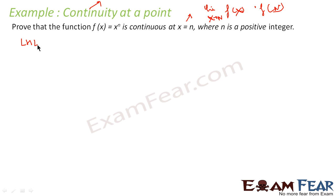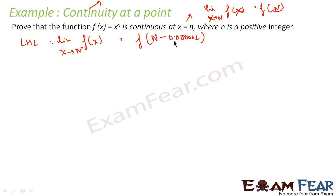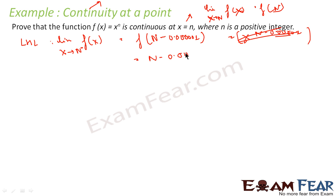Let's find the left-hand limit: the limit of f(x) as x tends to n minus, taking a number just less than n. We take n minus 0.0000001, a number not equal to n but just less than n. So this becomes (n minus 0.0000001) to the power n, which is almost equal to n to the power n. So my left-hand limit is n to the power n.